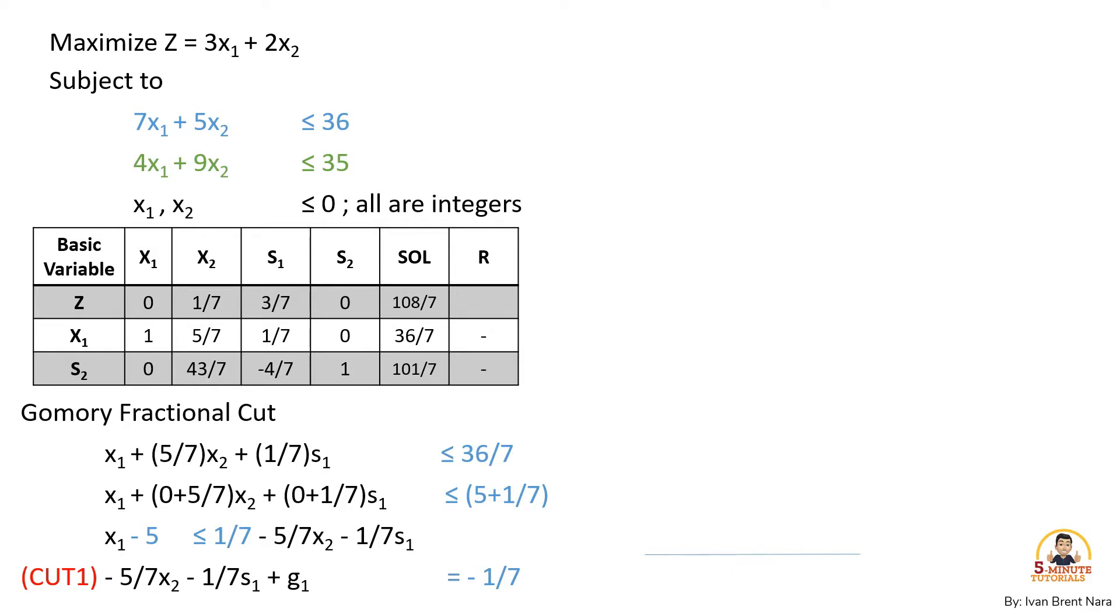Break down the fraction into a mixed fraction, whole number plus the fractional part. Then, simplify by moving the integer number to the left side and fraction into the right side. The formula for our first cut is negative 5 over 7 x sub 2 minus 1 over 7 x sub 1 plus g sub 1 equals negative 1 over 7.